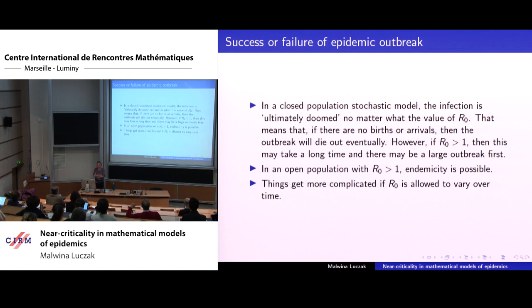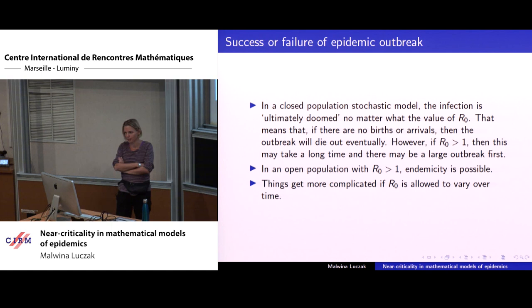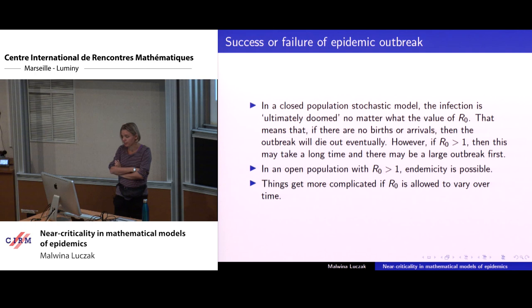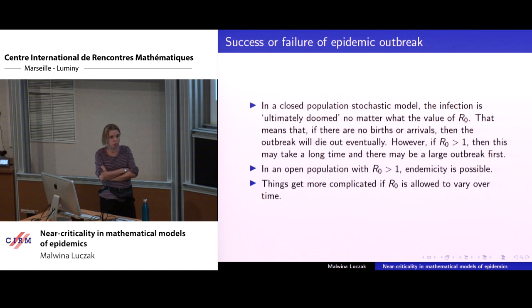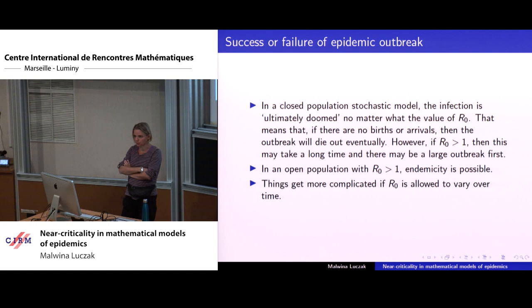If you have a closed population stochastic model — no births, no immigration — then no matter whether R0 is greater than one or less than one, the epidemic is ultimately doomed because we don't have enough of a pool of susceptible individuals to keep it growing. However, if R0 is greater than one and you have a large population, even if closed, it may take a long time and you may first get quite a large outbreak before it finally dies out. On the other hand, if you have an open population with births and immigration, and R0 is greater than one, then it's possible for the disease to become endemic.